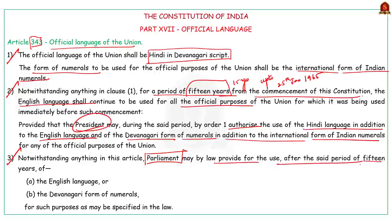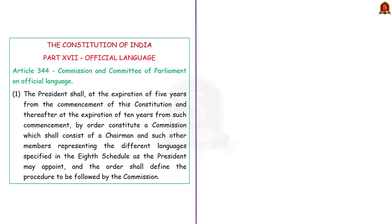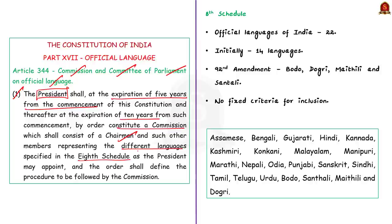Article 344, Clause 1 empowers the president to constitute an official language commission. The commission shall be constituted at the expiration of 5 years and then 10 years from the commencement of the constitution. It shall consist of a chairman and members representing the different languages specified in the 8th Schedule. The 8th Schedule of the Constitution lists the official languages of India. Currently there are 22 languages under the 8th Schedule — initially there were 14, and more were added through constitutional amendments. The latest addition was through the 92nd Amendment Act of 2003, which added Bodo, Dogri, Maithili and Santali.